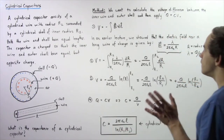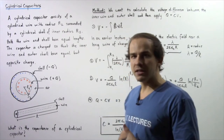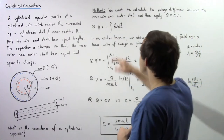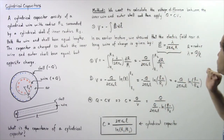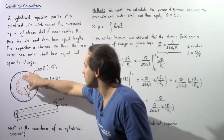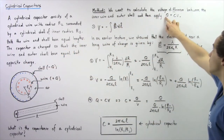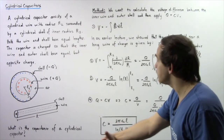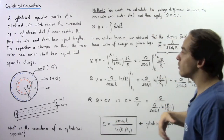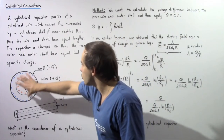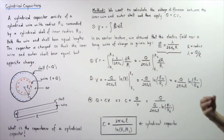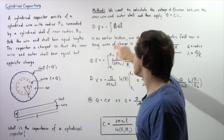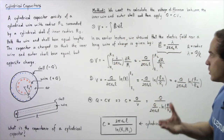So what exactly is the equation for capacitance? We begin by looking at the method we're going to use. First, we basically want to calculate what the voltage difference is between the inner wire and the outer shell, and then we want to apply the equation Q is equal to C multiplied by V, where V is our voltage difference, Q is our electric charge stored on either region, and C is what we're solving for — that's our capacitance.